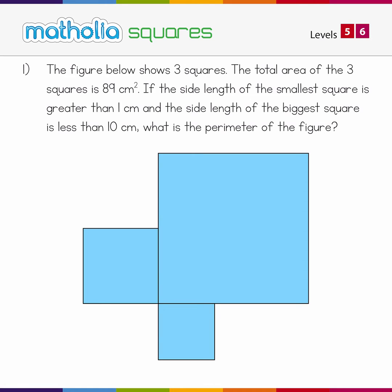The figure below shows three squares. The total area of the three squares is 89 square centimetres. If the side length of the smaller square is greater than 1 centimetre and the side length of the bigger square is less than 10 centimetres, what is the perimeter of the figure?